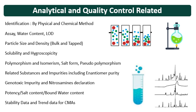Starting from the COA parameters: identification should be by physical and chemical methods like IR and HPLC. Then what is the assay, water content or loss on drying, particle size, bulk density and tap density, solubility and hygroscopicity — whether the material is hygroscopic or non-hygroscopic. Then polymorphism and isomerism — whether the molecule shows polymorphism and isomerism, what are the different polymorphs produced by the manufacturer, and whether there is a specific polymorph or a polymorphic mixture. Then salt form or pseudo-polymorphism — sometimes the API is produced in the form of solvates and hydrates, which are known as pseudo-polymorphs.